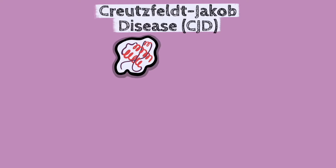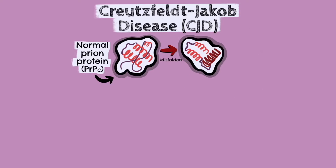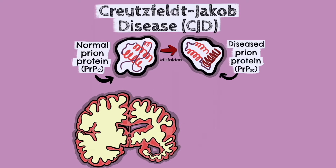So what is a prion? A prion is actually a normal structural component of the nervous system. However, it can become misfolded into an abnormal or diseased prion protein. These misfolded prion proteins can catalyse the conversion of normal prion proteins into abnormal ones in a chain reaction. The abnormal prion proteins accumulate in the brain and can cause irreversible damage.